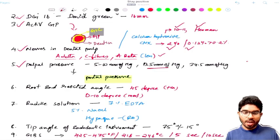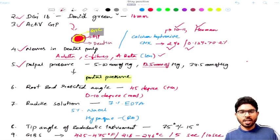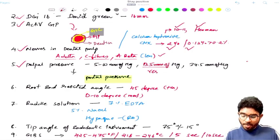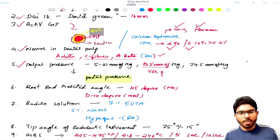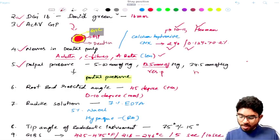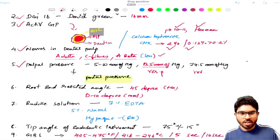Next important thing that you have to make a note is irreversible pulpitis and reversible pulpitis. So reversible pulpitis, it is 13.5 millimeters of Hg. Irreversible pulpitis, it is 34.5 millimeters of Hg.